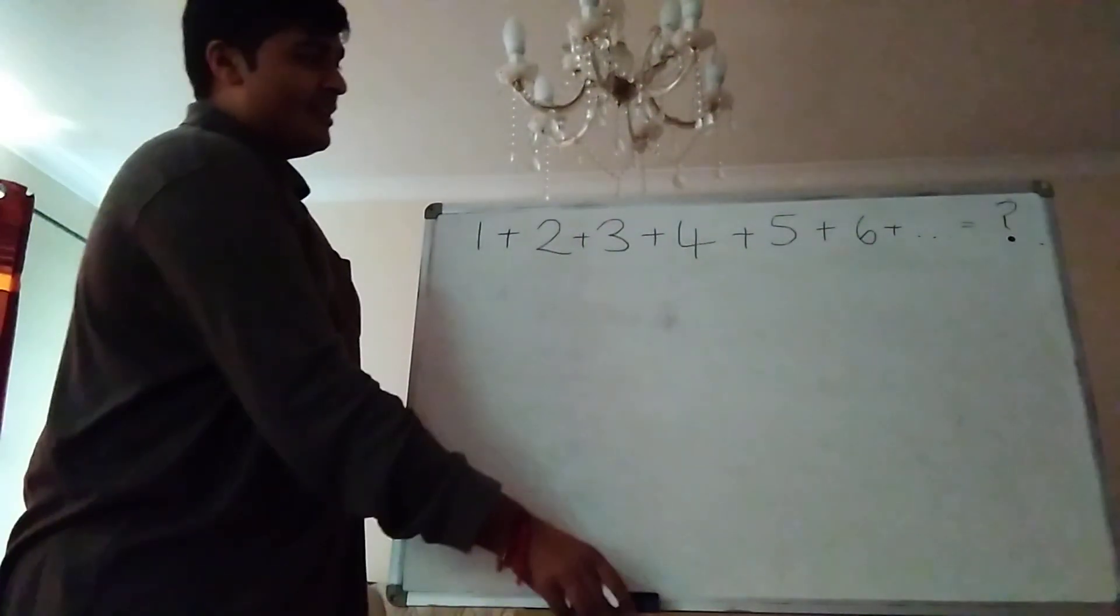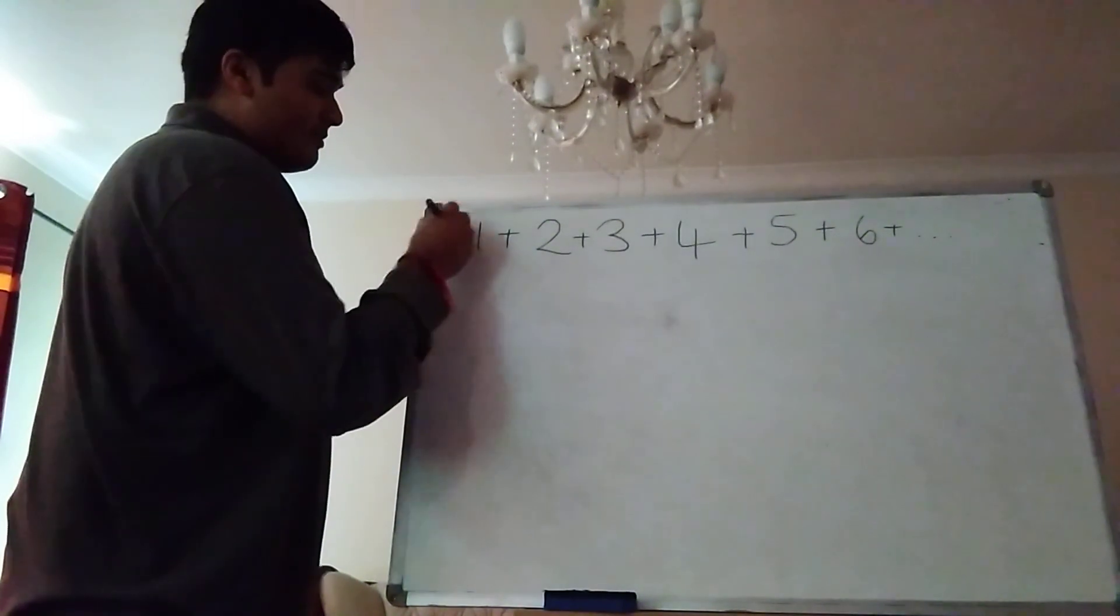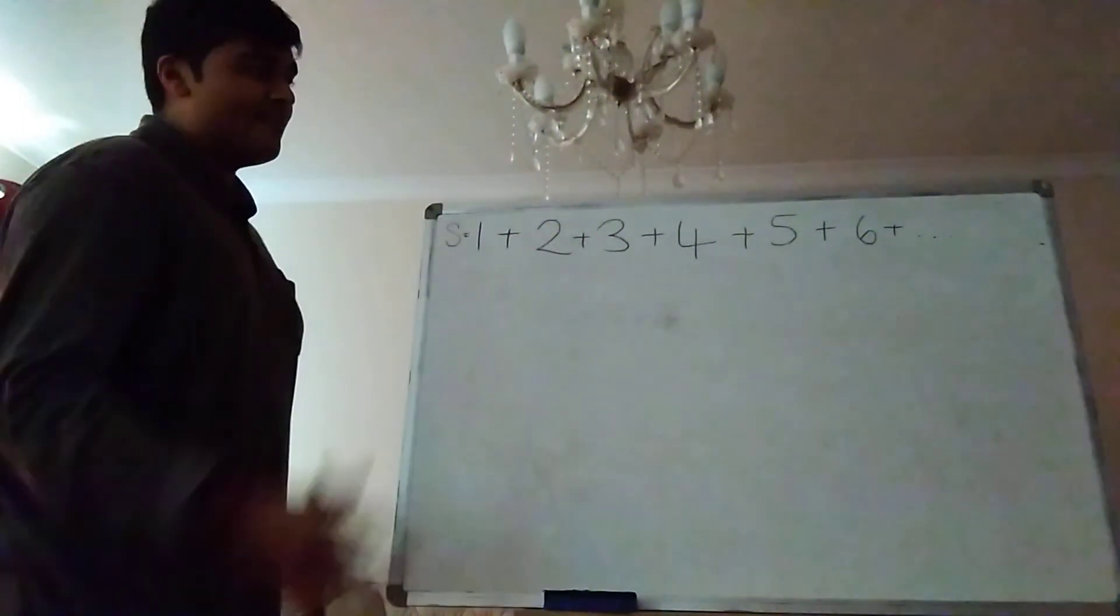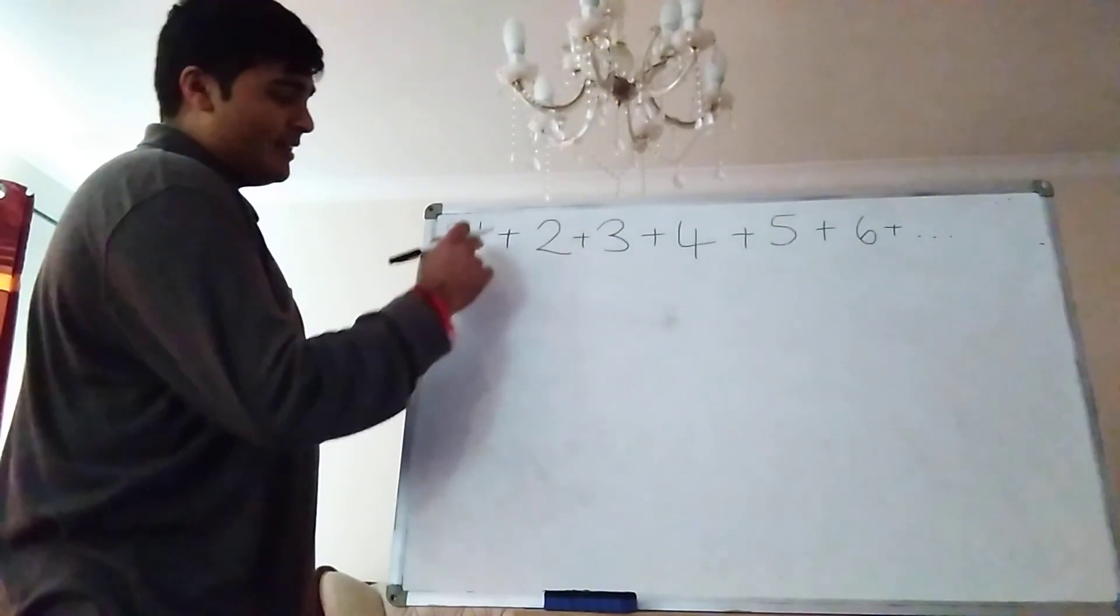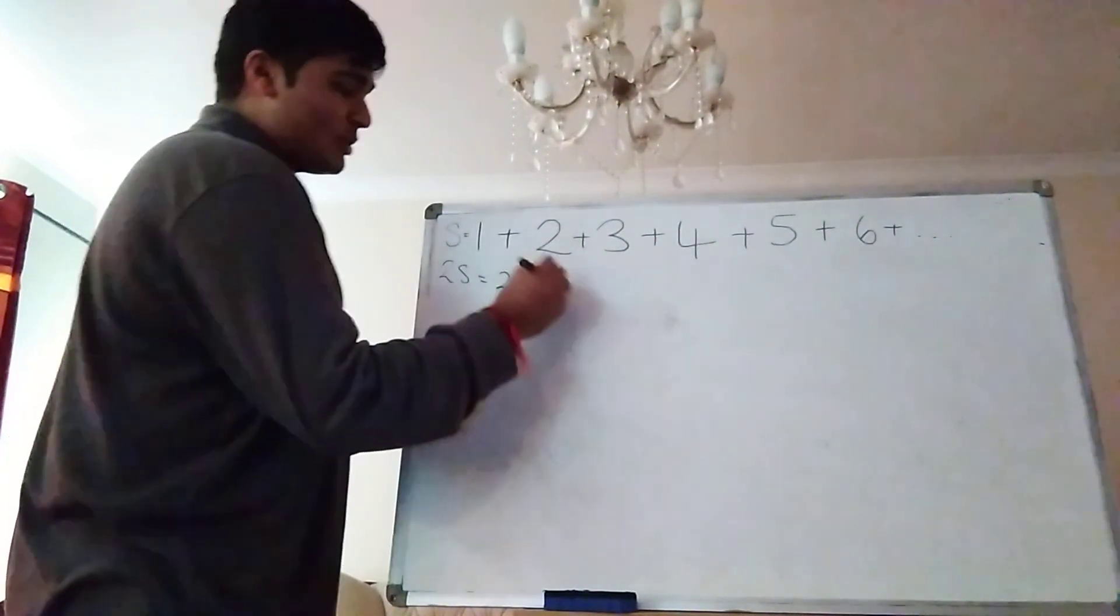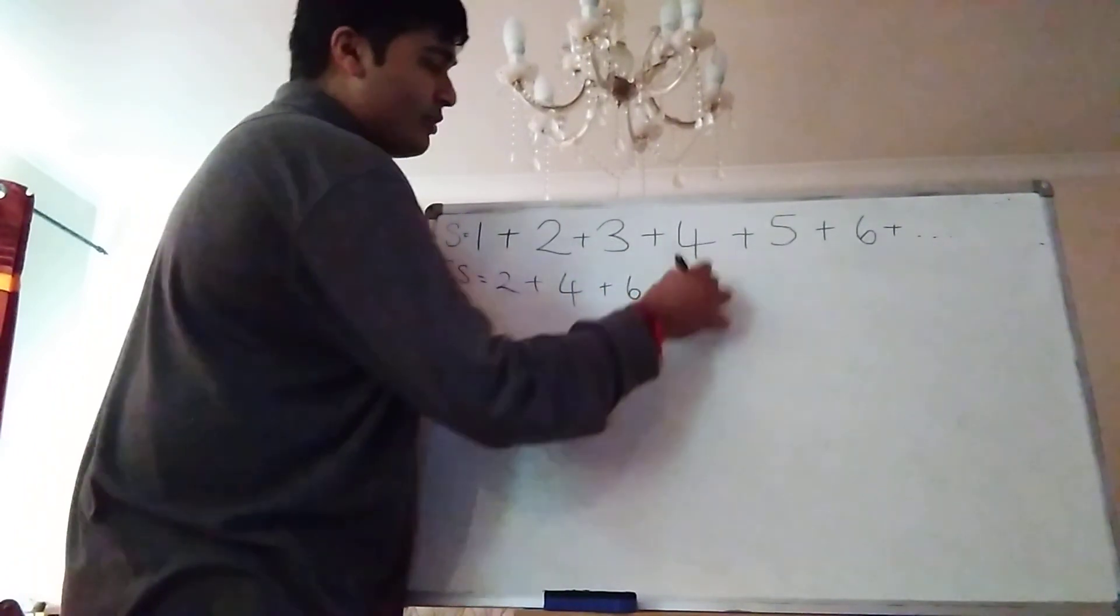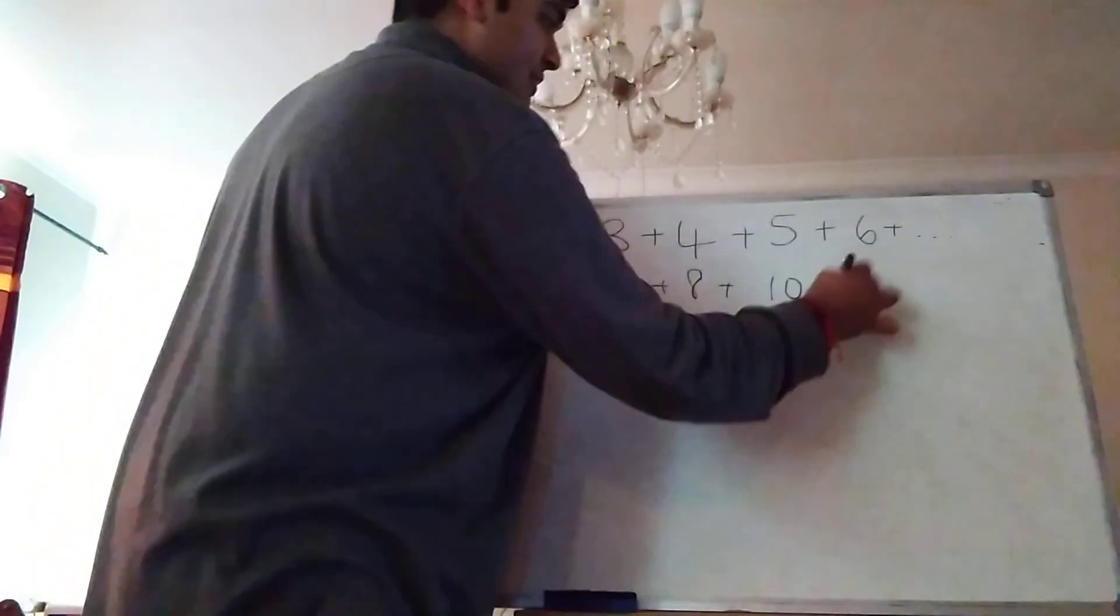So I'm just going to crack on. Let's call this sum here, S. Okay, so S is equal to the sum of the positive integers. Let's firstly double S, so 2S. If I double 1, I get 2. Double 2, I get 4. Double 3, I get 6. And I get all the even positive integers.